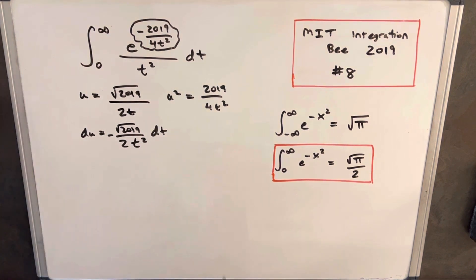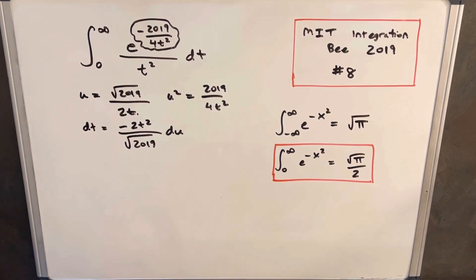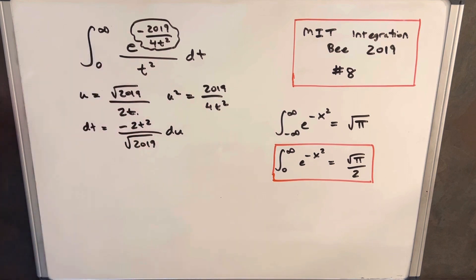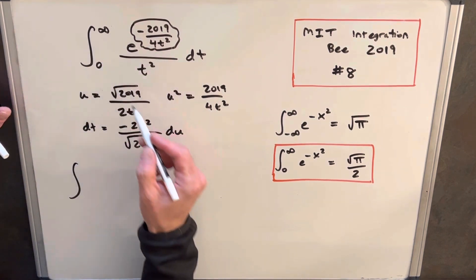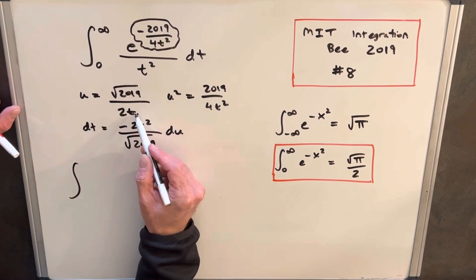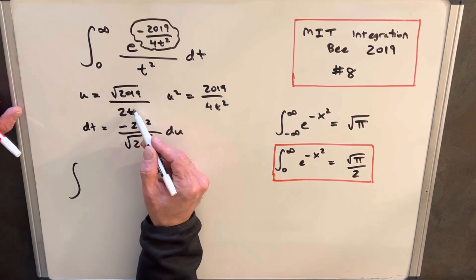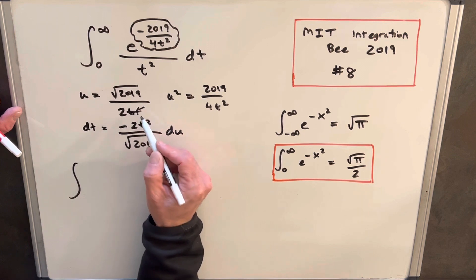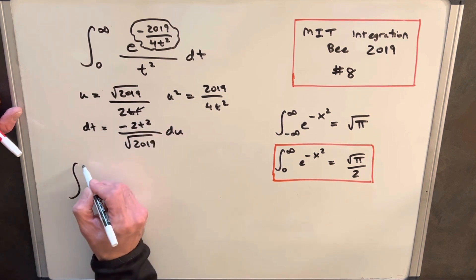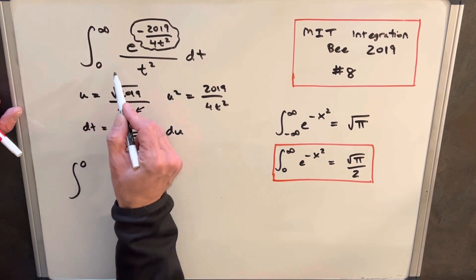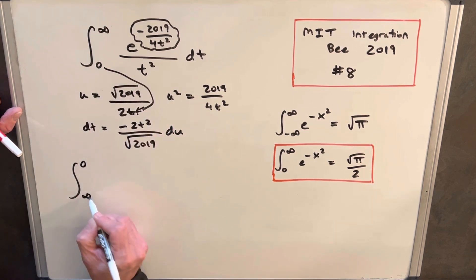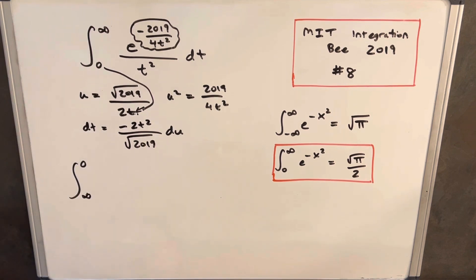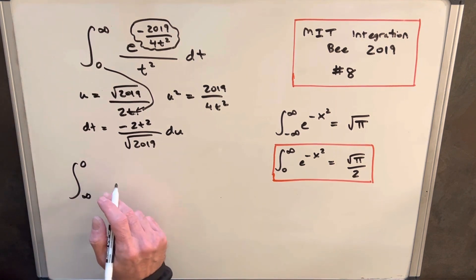Then let's solve this for dt. Now we can make our substitution, but first we need to update our limits of integration. We'll plug in infinity for t — this expression goes to 0. And if you put 0 in for t, this goes to infinity. So informally looking at those limits, our boundaries change from (infinity, 0) to (0, infinity).